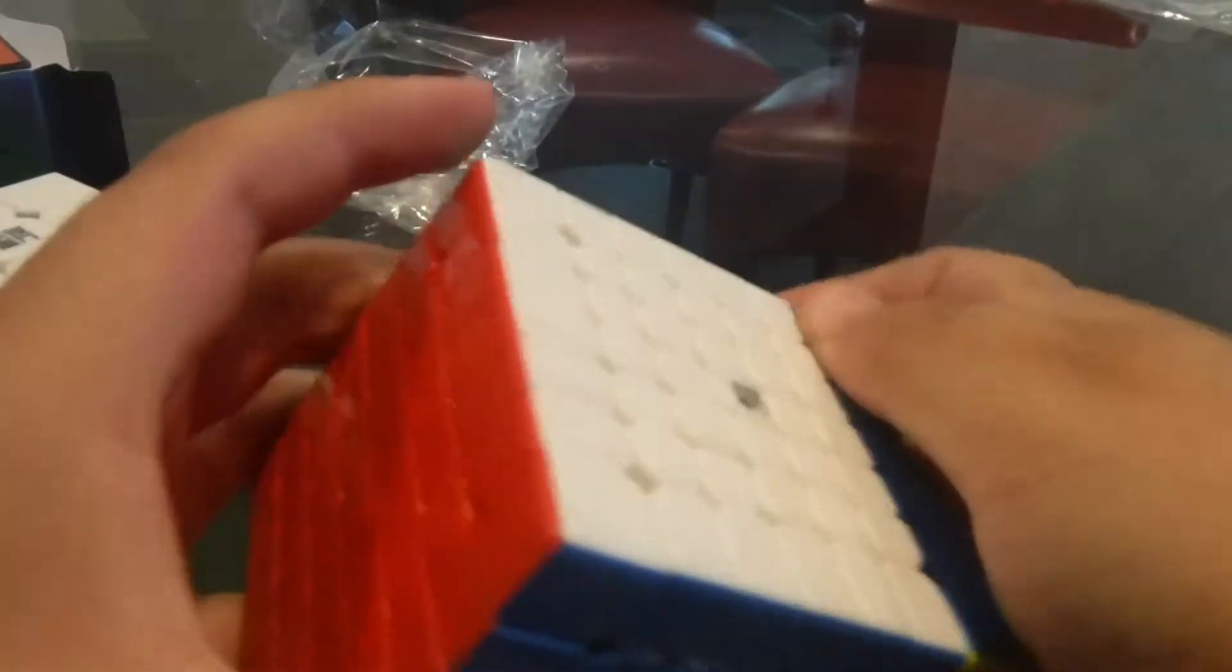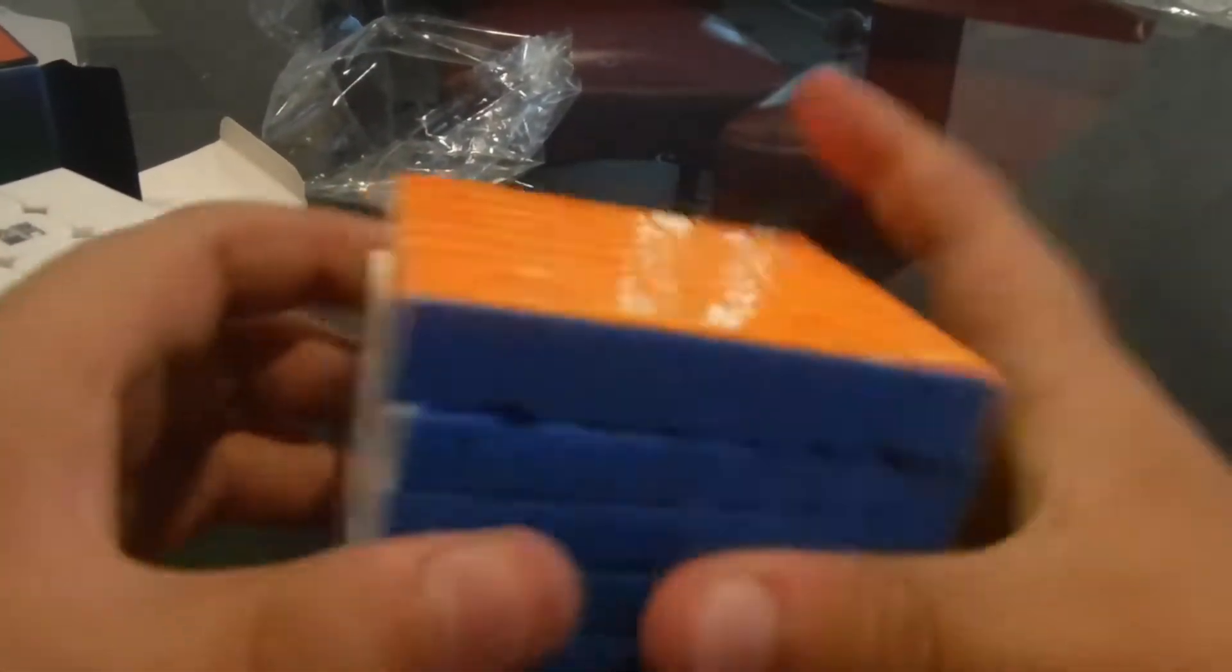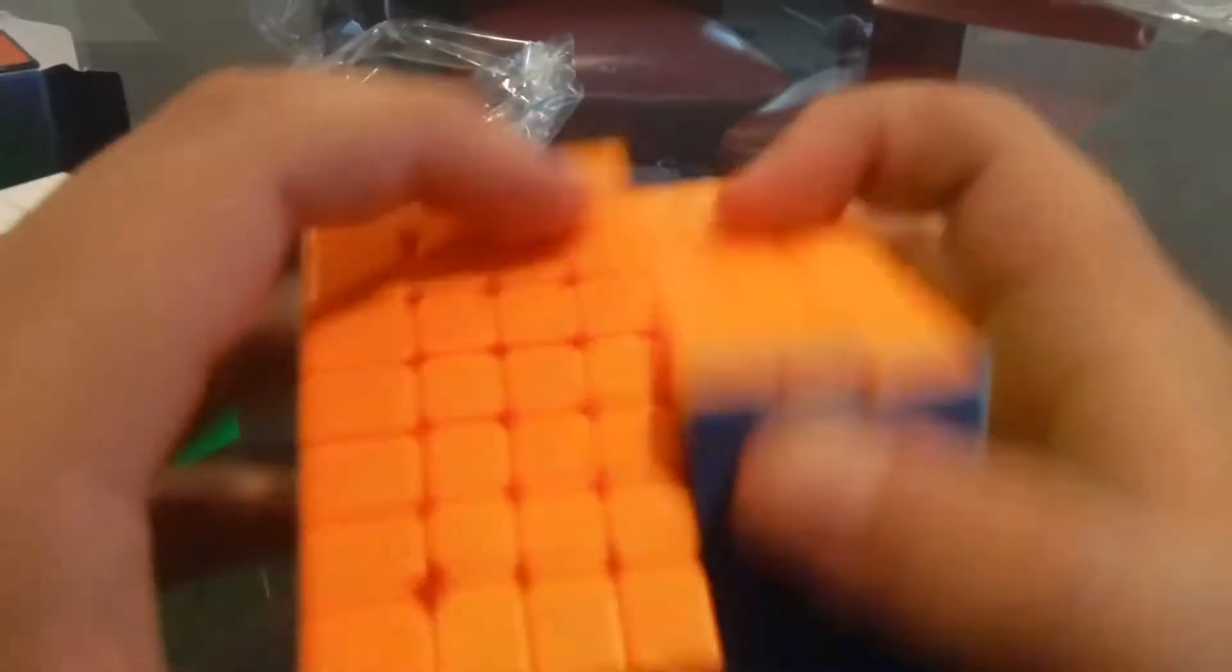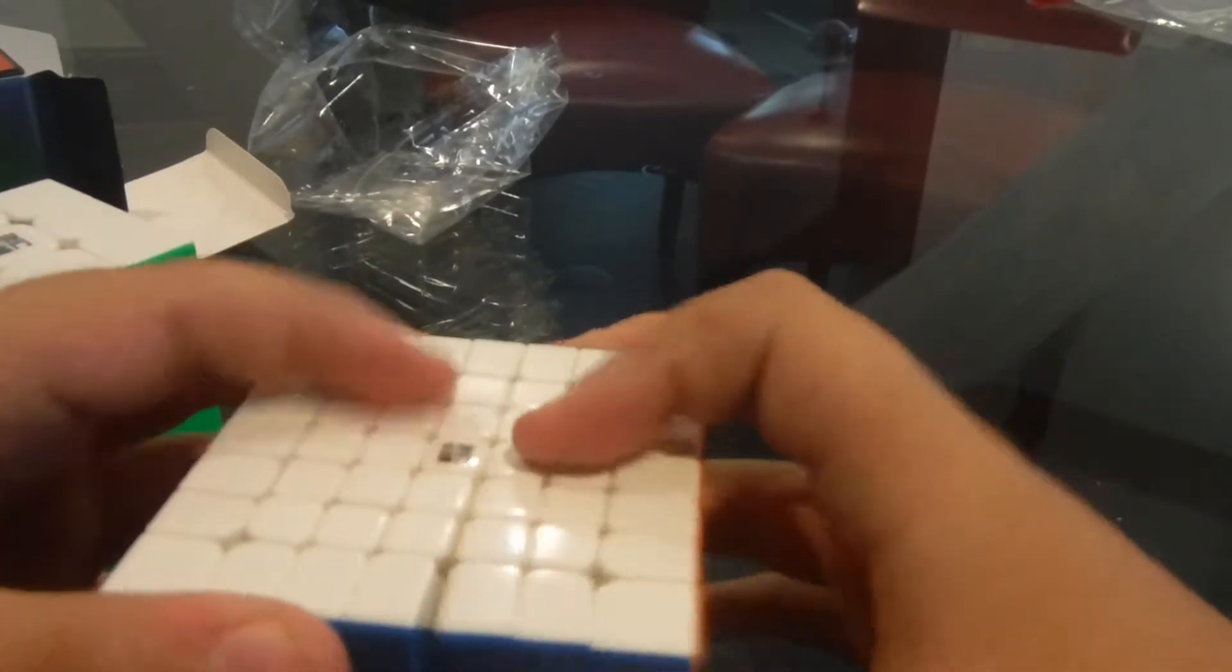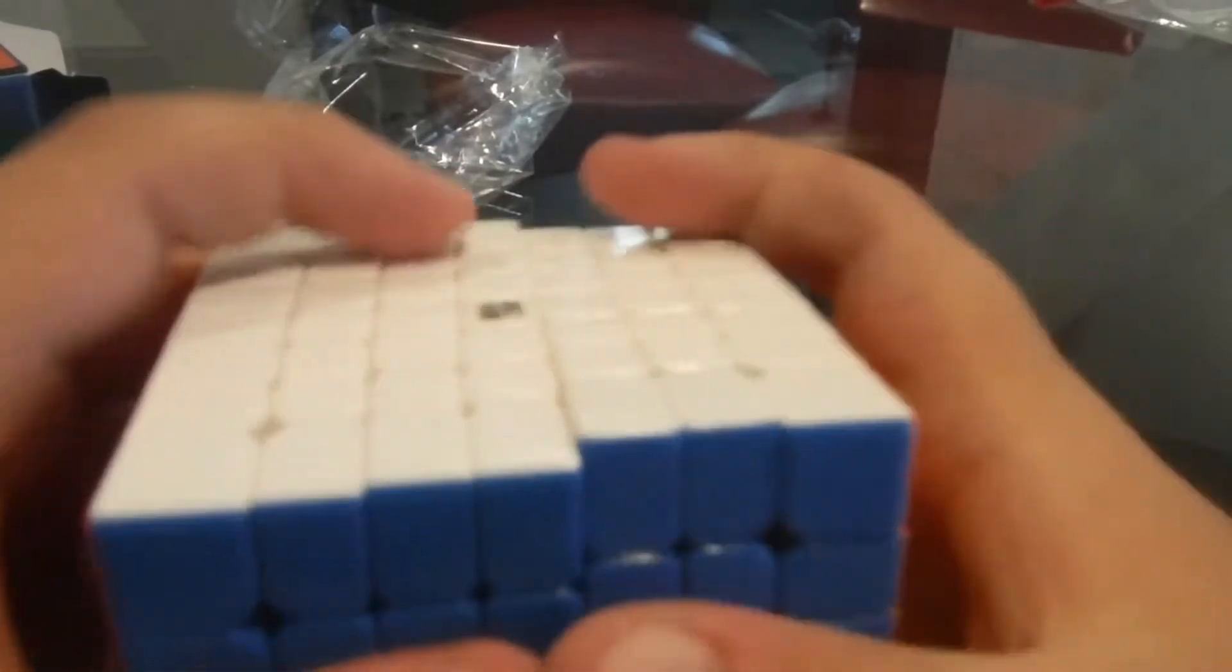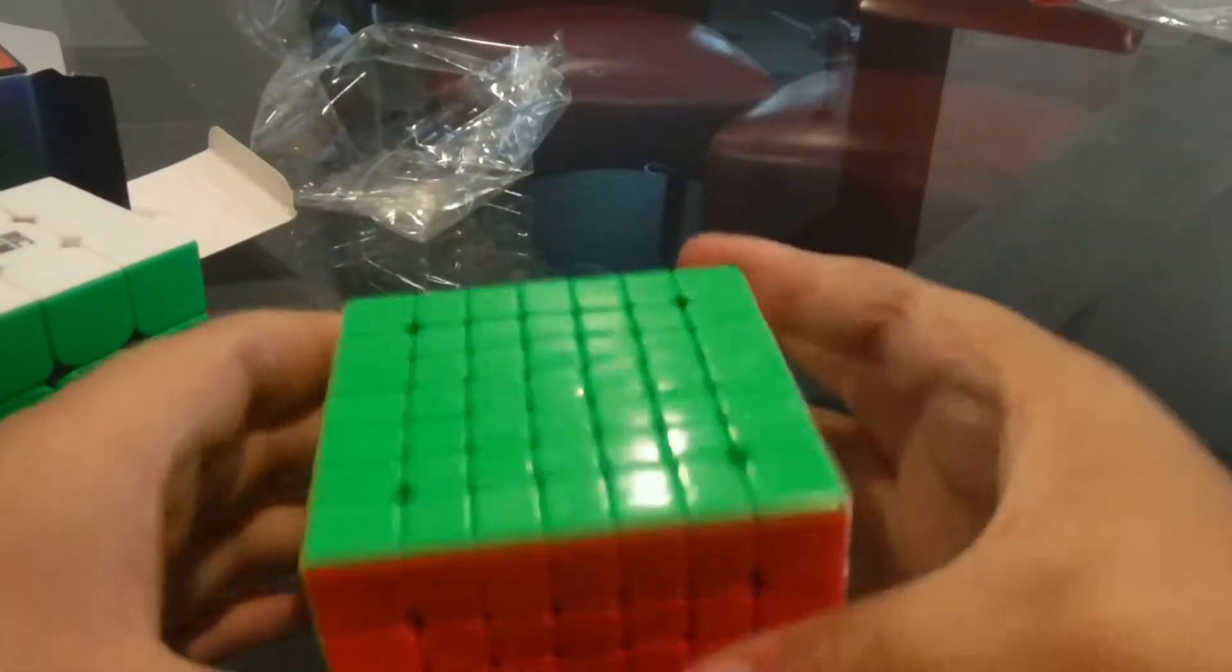Wow, these pieces are really small. First turns. I've never had a 7x7 so I'm kind of turning slow here. Out of the box, the outer layers are kind of scratchy, kind of stiff. But the inner layers are pretty good.